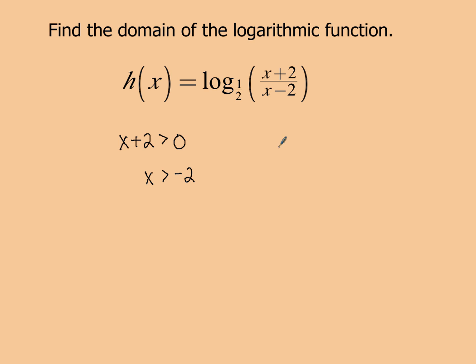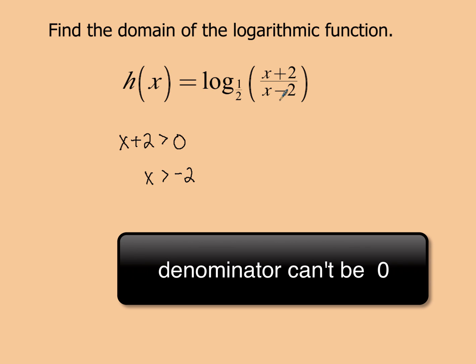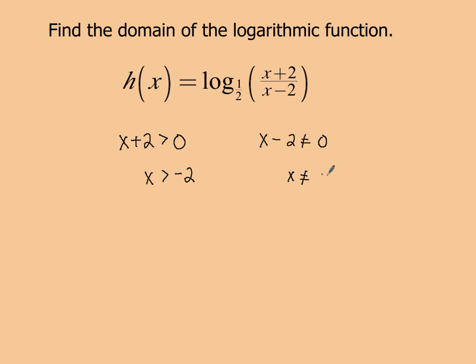Now the second thing you have to pay attention to is the denominator. Now the denominator can't be 0, so x minus 2 cannot equal 0. When you solve that, you get the value of 2, so x can't have a value of 2. Now what you have to do next is actually test these values. And so what you're going to do is you're going to make a number line and you're going to put negative 2 in one spot and positive 2 in the other spot.